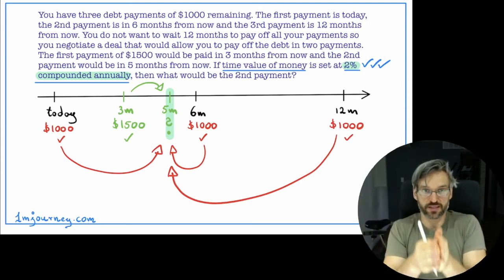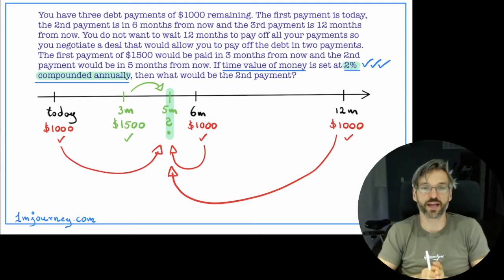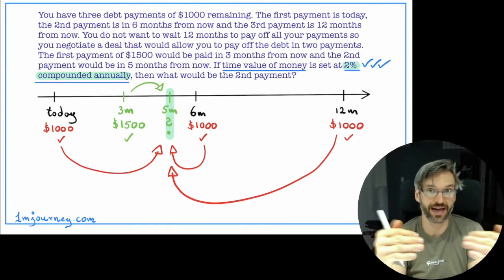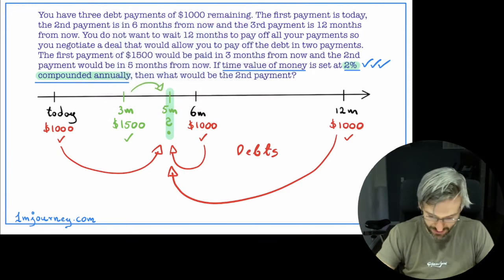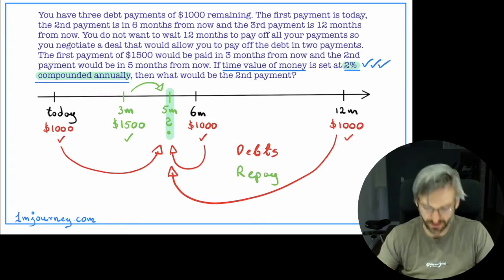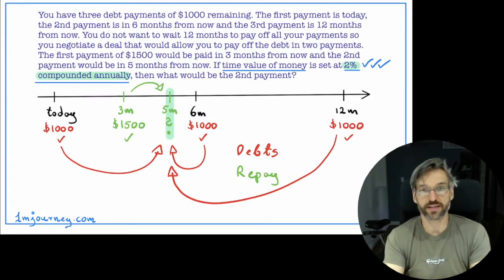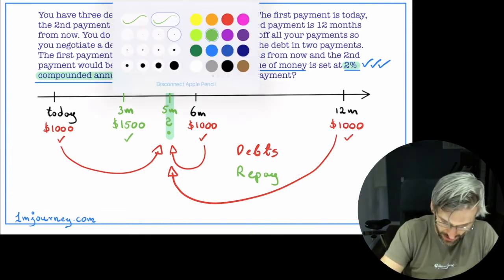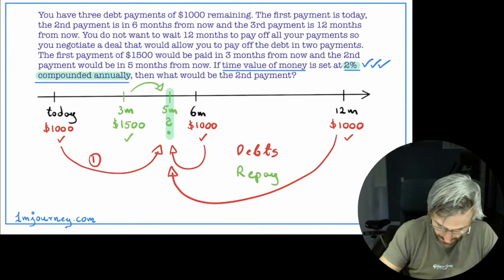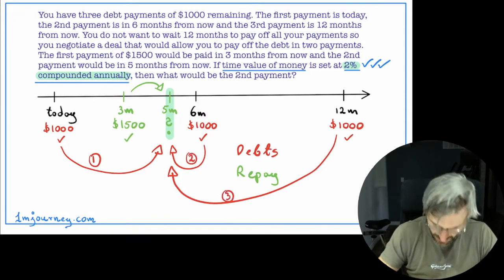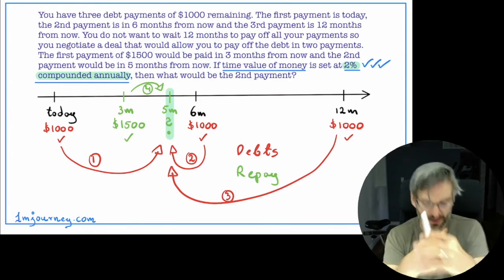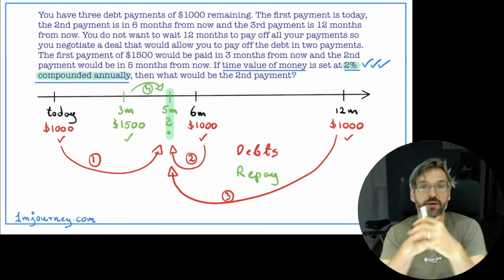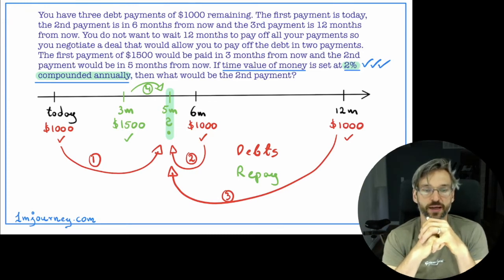If I bring them all to the same time frame — the same focal date — then I can compare, add them and subtract them. I can take all my debt and all my repayments, and they're supposed to be equal. Let me label these points: one, two, three, four — at different points in time — and the five months I will find out what it is equivalent to.